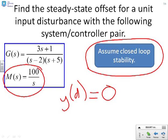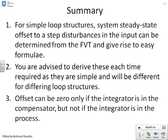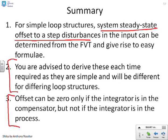In summary then, for simple loop structures, which we've been assuming in this video, the system's steady-state offset to a step disturbance in the input is easy to determine using the final value theorem. And you get straightforward formulas. However, a warning. You are advised to derive these each time from first principles because, in general, your loop structure may be slightly different. And if you rely on memorizing formulas and the loop structure is a bit different, you're going to be unstuck. But if you know how to derive the formula and apply the final value theorem, you won't care what loop structure you get. You'll be able to get the answer quite quickly. For the simple loop structure we've given here, you'll notice the offset can be 0 only if the integrator is in the compensator, but not if the integrator is in the process. And that's quite an interesting observation. The reason I've said can be is, of course, you need to assume that the closed loop is stable.